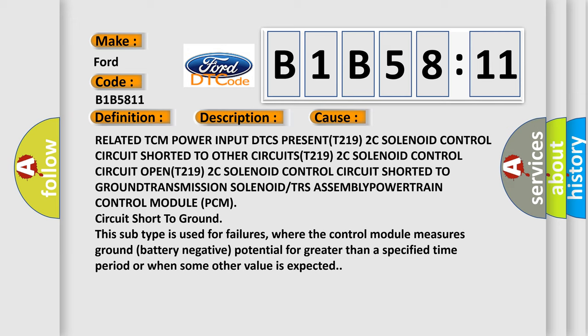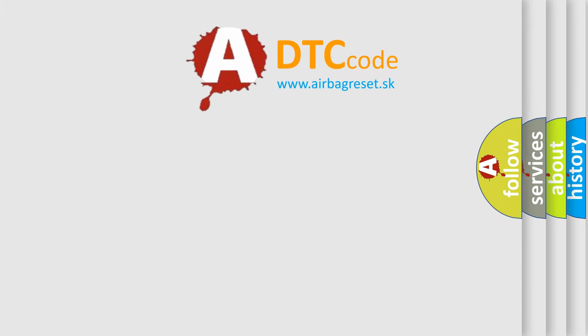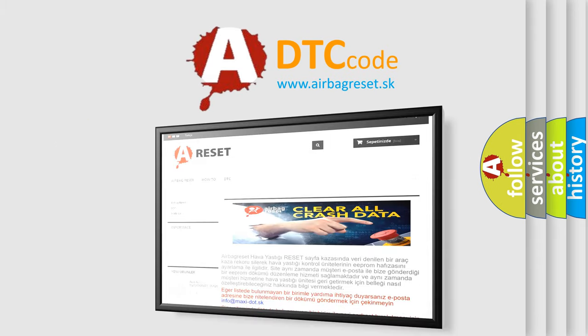This subtype is used for failures where the control module measures ground battery negative potential for greater than a specified time period or when some other value is expected. The airbag reset website aims to provide information in 52 languages.